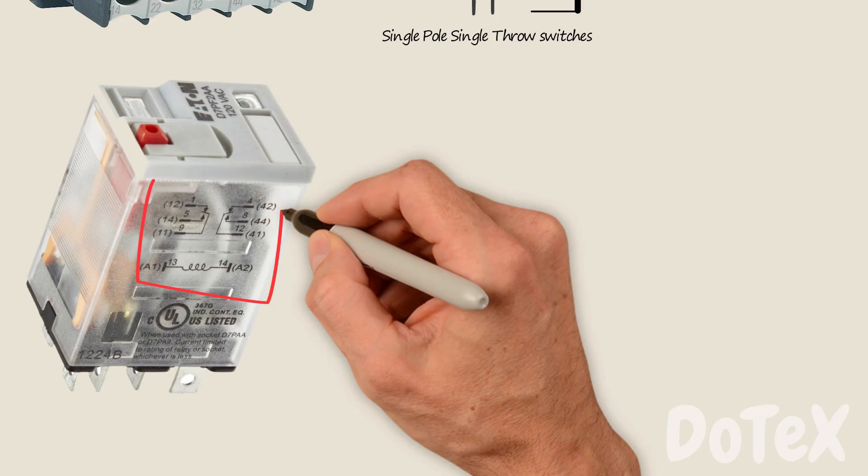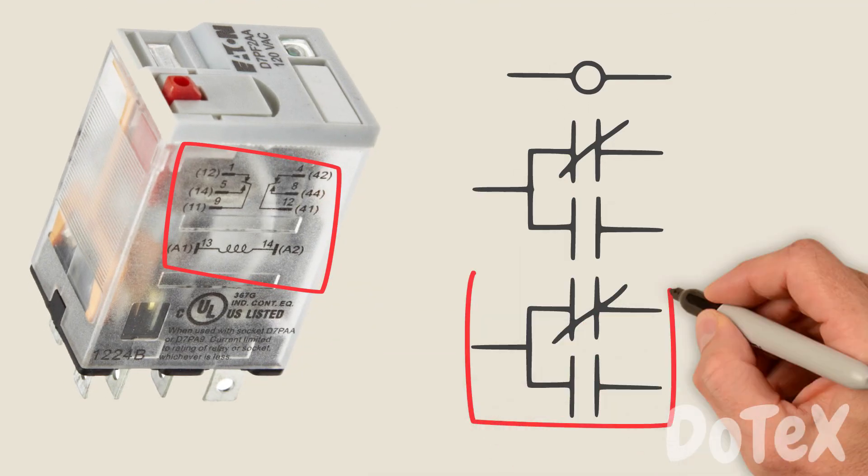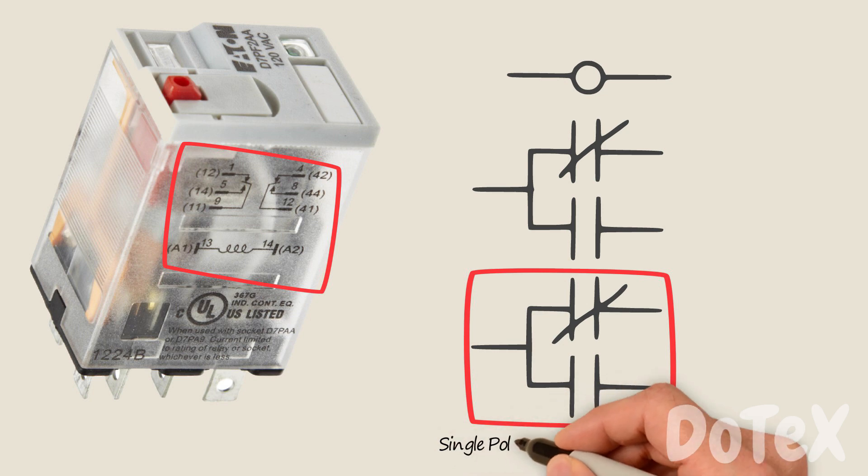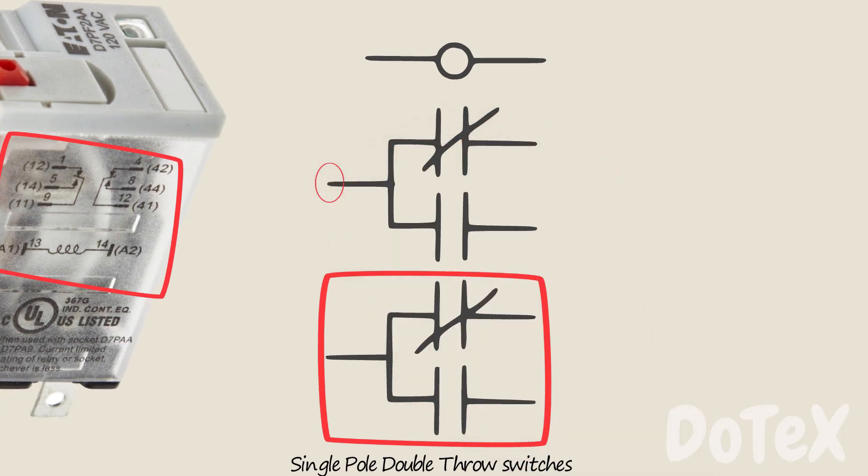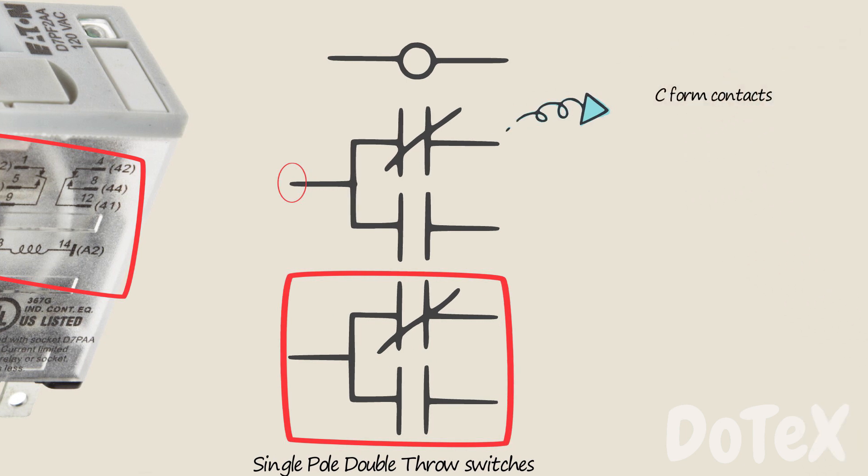In the ice cube relay, this is the schematic symbol. These contacts are single pole double throw switches that share common terminal, sometimes called C form contacts or transfer switches.